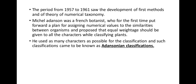The period from 1957 to 1961 saw the development of the first methods and the theory of numerical taxonomy. Michael Adanson was a French botanist who for the first time put forward a plan for assigning numerical values to the similarities between organisms, and proposed that equal weightage should be given to all characters while classifying plants. He used as many characters as possible, and such classification came to be known as Adansonian classification.